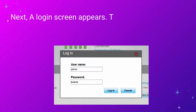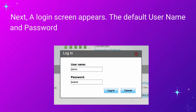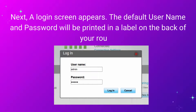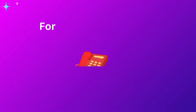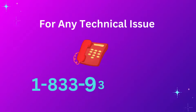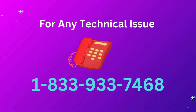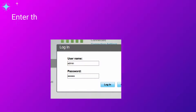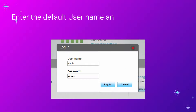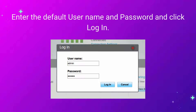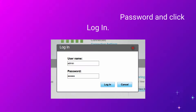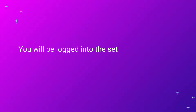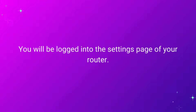Next, a login screen appears. The default username and password will be printed on a label on the back of your router. Enter the default username and password and click Login. You will be logged into the settings page of your router.